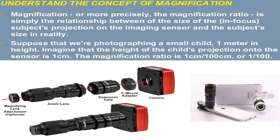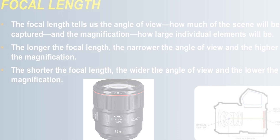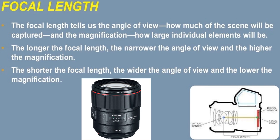Magnification, or more precisely the magnification ratio, is simply the relationship between the size of the in-focus subject's projection on the imaging sensor and the subject's actual size. For example, if photographing a child one meter in height whose projection on the sensor is one centimeter tall, the magnification ratio is 1 cm / 100 cm, or 1/100.